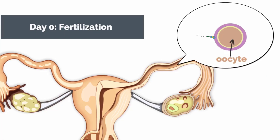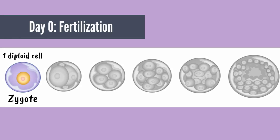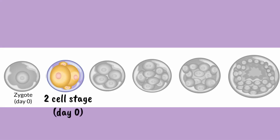The ovulated oocyte is surrounded by the zona pellucida and usually is fertilized in the ampulla of the fallopian tube. Fertilization of the oocyte by a sperm creates a zygote, a diploid cell with 46 chromosomes. Cleavage of the zygote creates two diploid cells, or the two-cell stage, with each cell referred to as a blastomere.